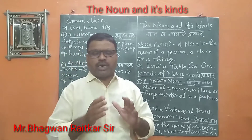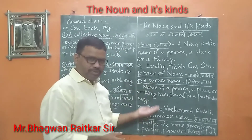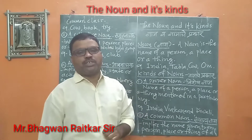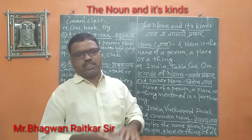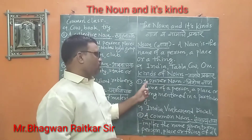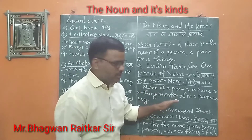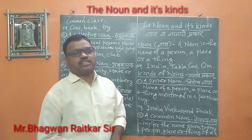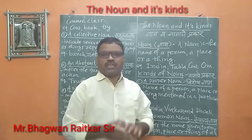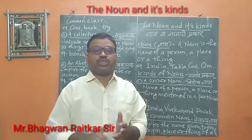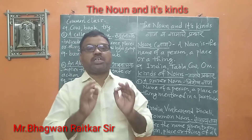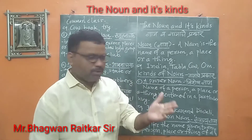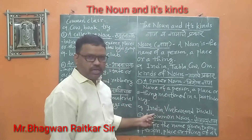The kinds of noun, we can see one by one. Kind number one is a proper noun. A proper noun means a type of noun — the name of a person, a place, or a thing mentioned in a particular way. For example, the examples are India, Vivekananda, Diwali.